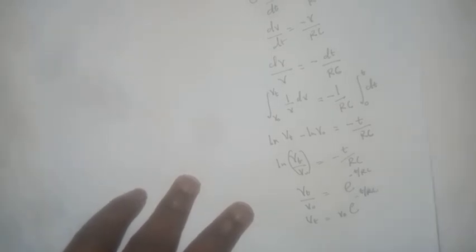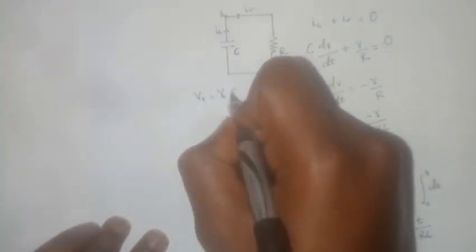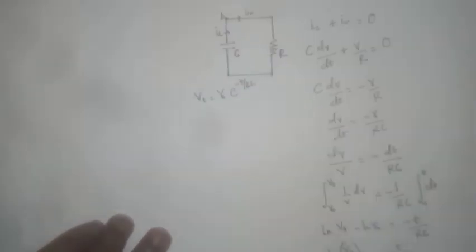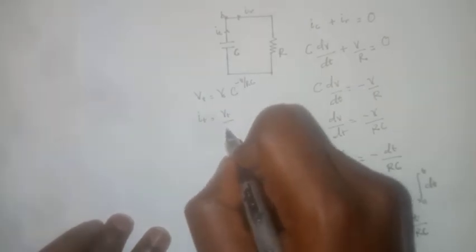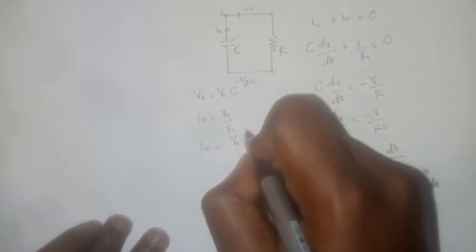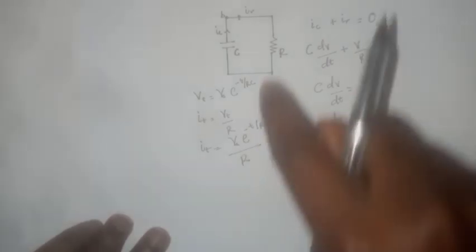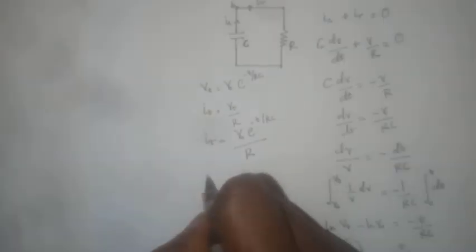Since we know the voltage across the resistor at any point in time is V(t) = V₀·e^(−t/RC), we can calculate the current at any point in time. Since current is V over R, we have i(t) = (V₀/R)·e^(−t/RC). That is the current at any point in time flowing through this resistor.